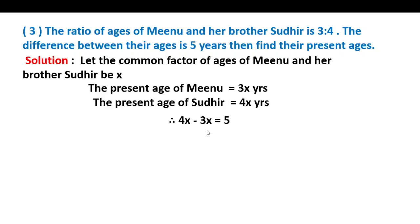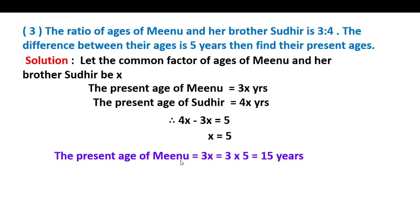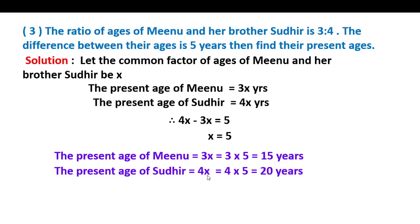Now let us find the difference. 4x minus 3x is equal to 5. Therefore x is equal to 5. The present age of Minu is 3x: 3 into 5 is equal to 15 years. And the present age of Sudhir is 4x: 4 into 5 equals 20 years. So their ages are 15 years and 20 years.